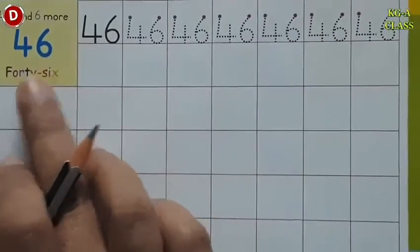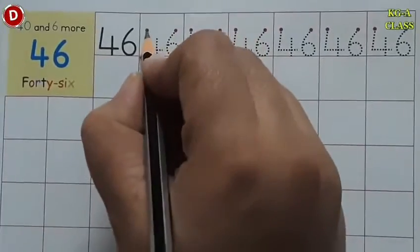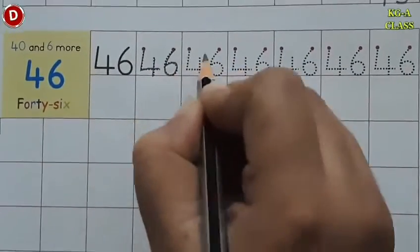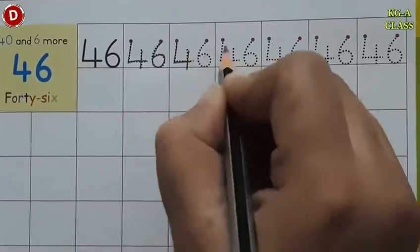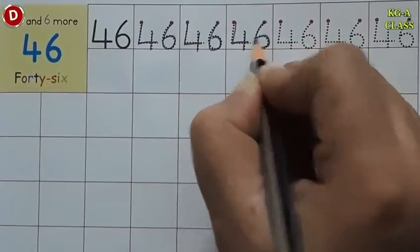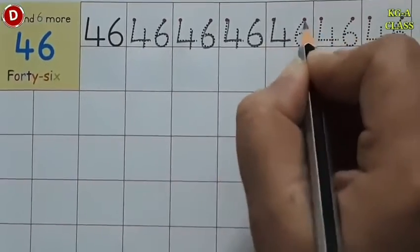Now the next number is 40 and 6 more makes 46. Again, in the first line, we will trace and write. 4, 6, 46. 46. 46. 46.